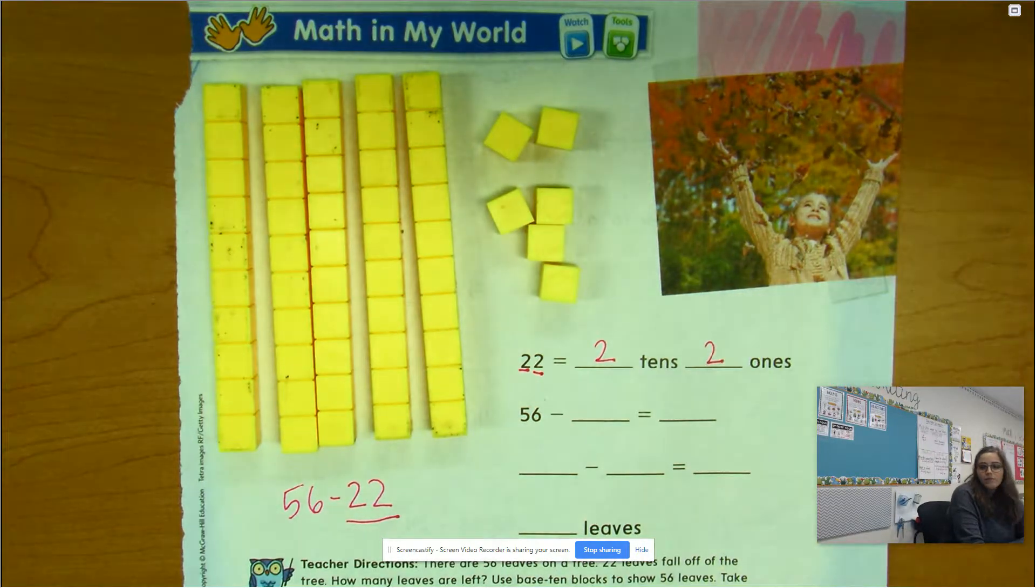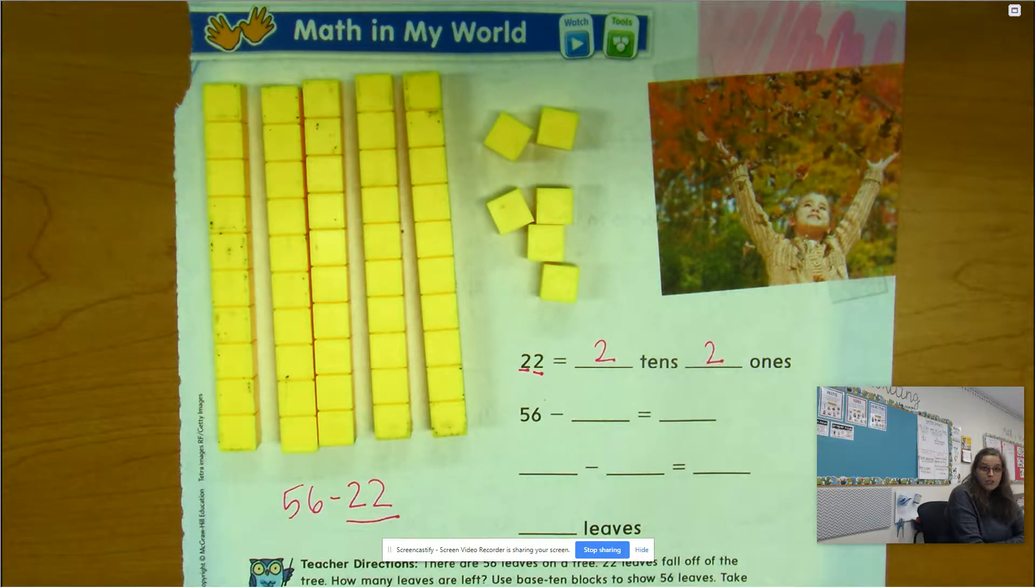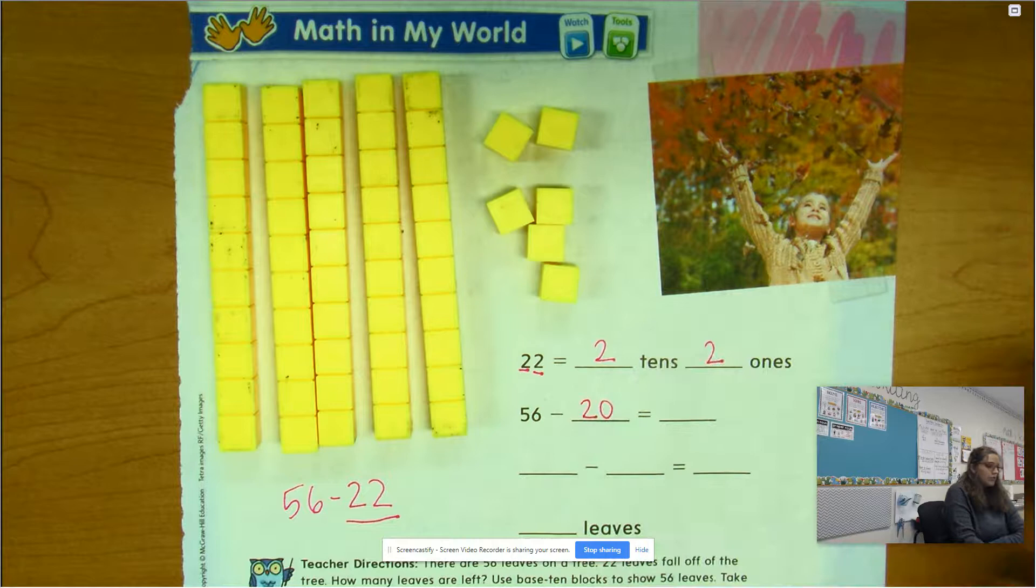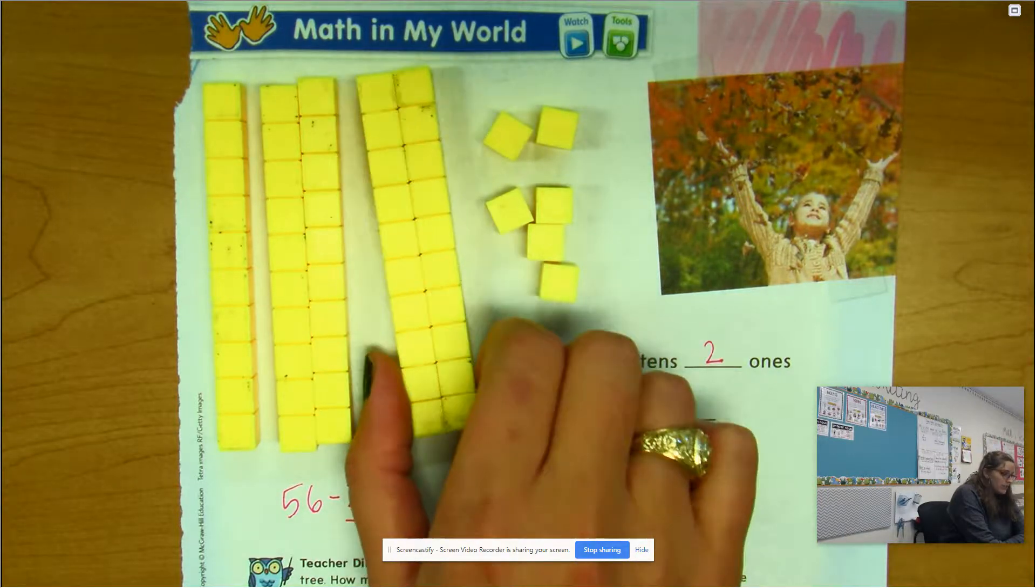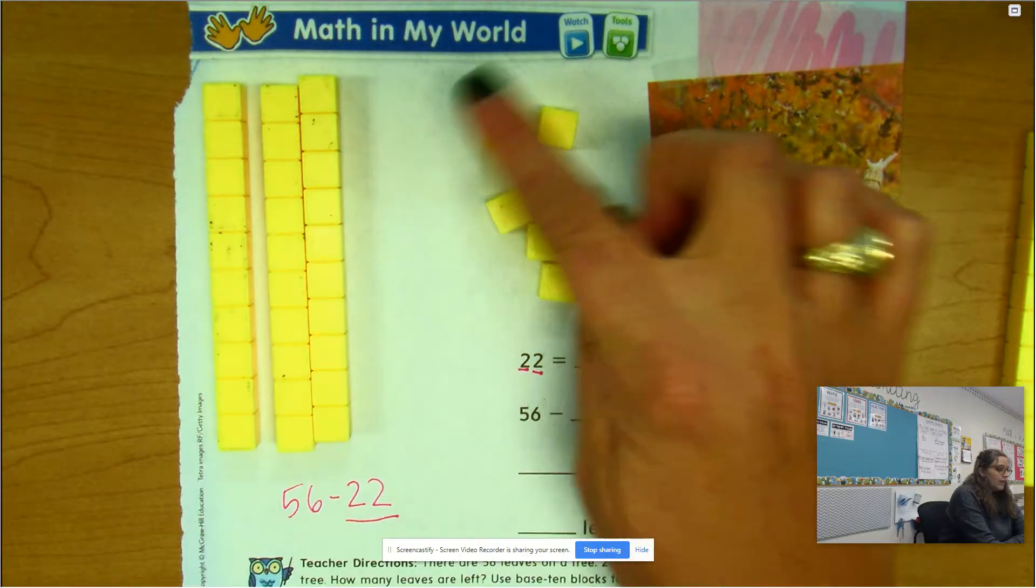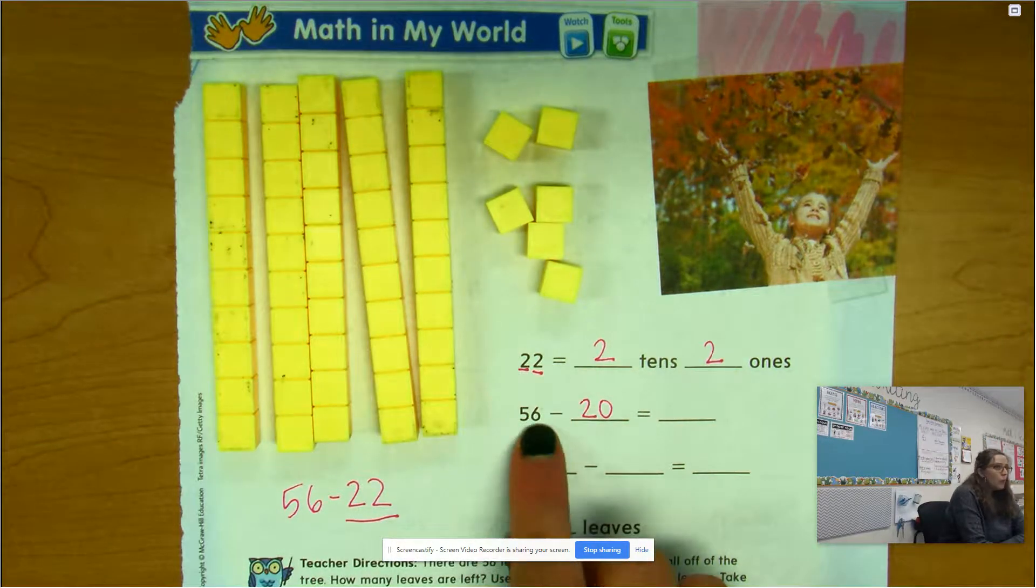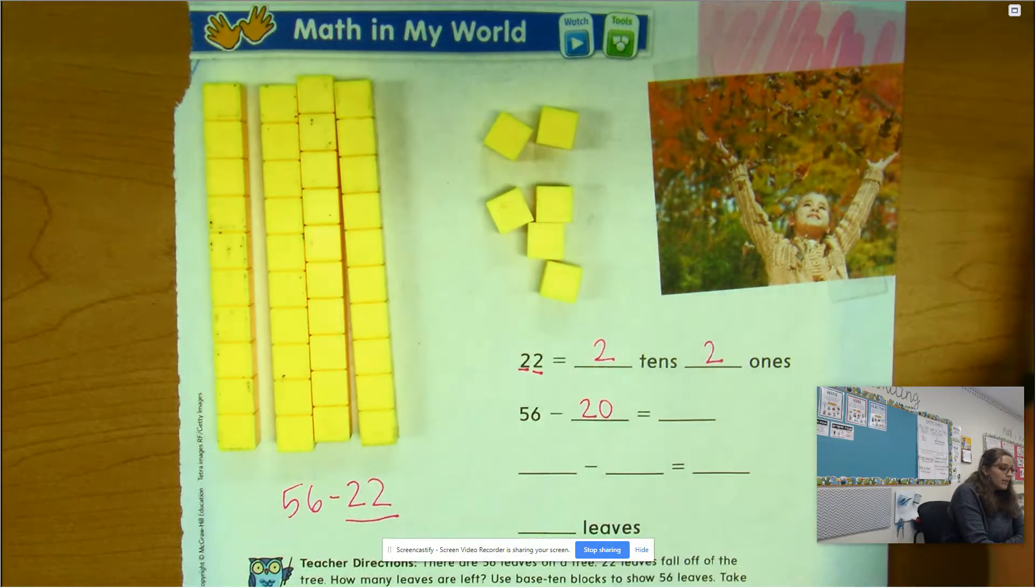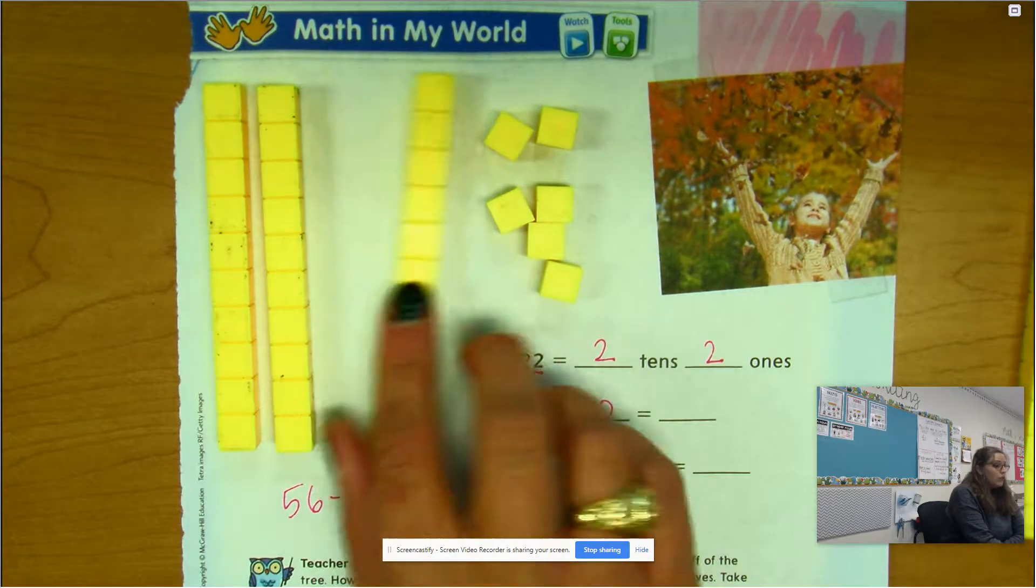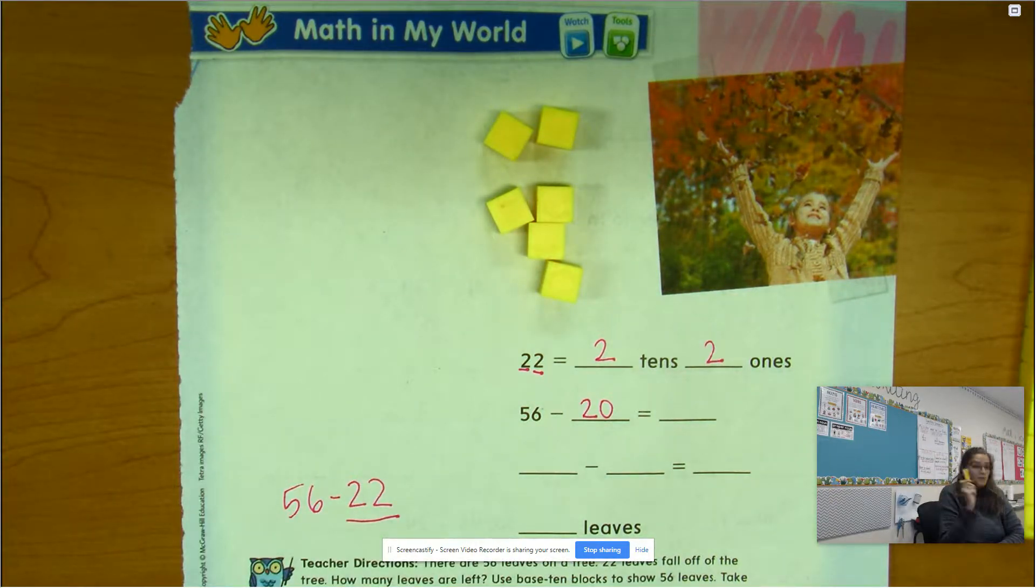I'm going to take away the tens first. Two tens is equal to 20, right? So I'm going to take 20 away first. If I take 20 away, how much am I left with? 36, right. A way that you can count backwards by tens is if you start at your number, the ones place isn't going to change - only the tens place changes. If I count backwards by tens it would be 56, 46, 36. If I kept taking them away it would be 26, 16, 6. You see how each of those numbers have a 6 in the ones place? Because the ones place doesn't change. But I'm only going to take away two tens, so if I take away 20, I'm left with 36.